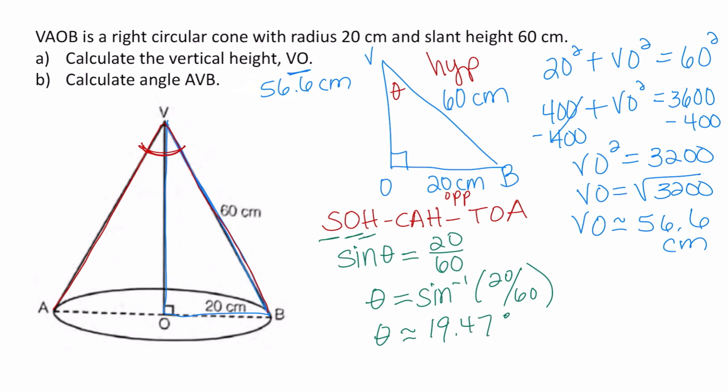That is not our final answer. Our job is to find angle AVB, so we take theta and multiply by 2. Keep the full decimal in your calculator to avoid round-off error. Multiplying by 2, the final answer is approximately 38.9 degrees. So angle AVB is approximately 38.9 degrees.